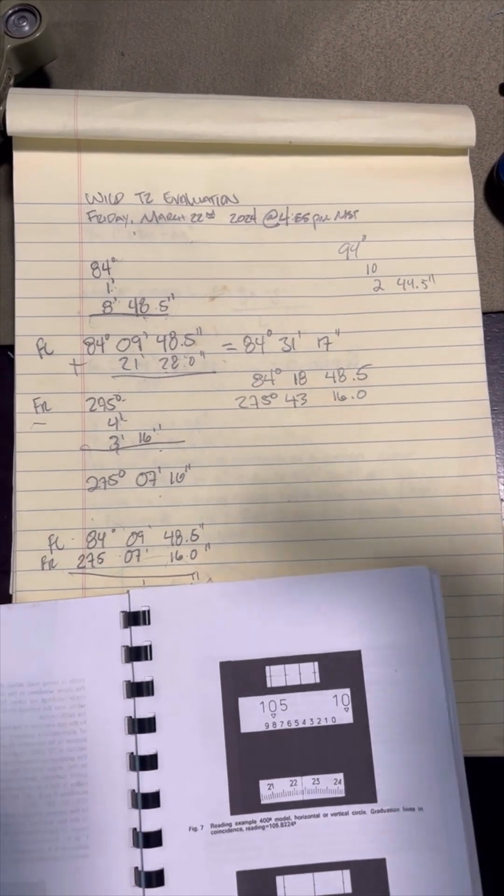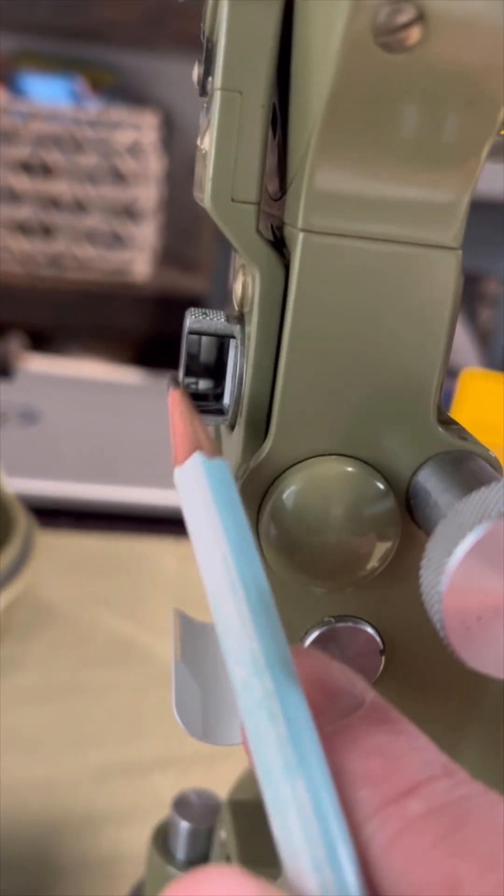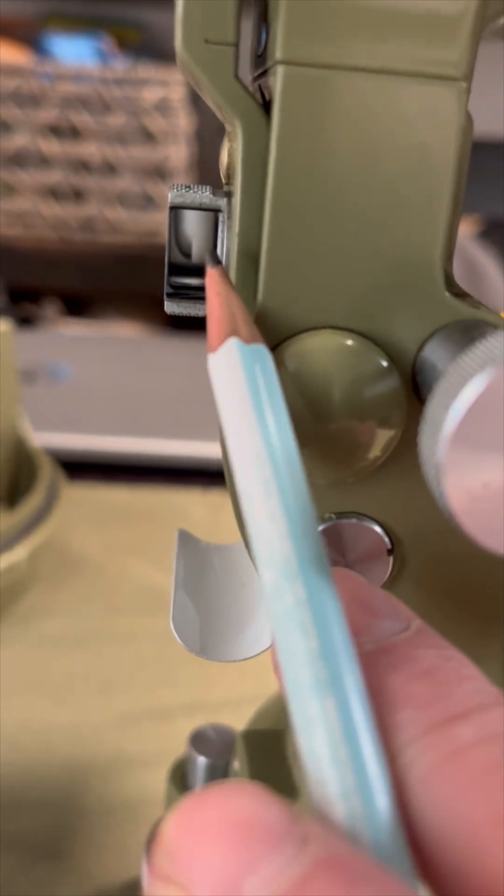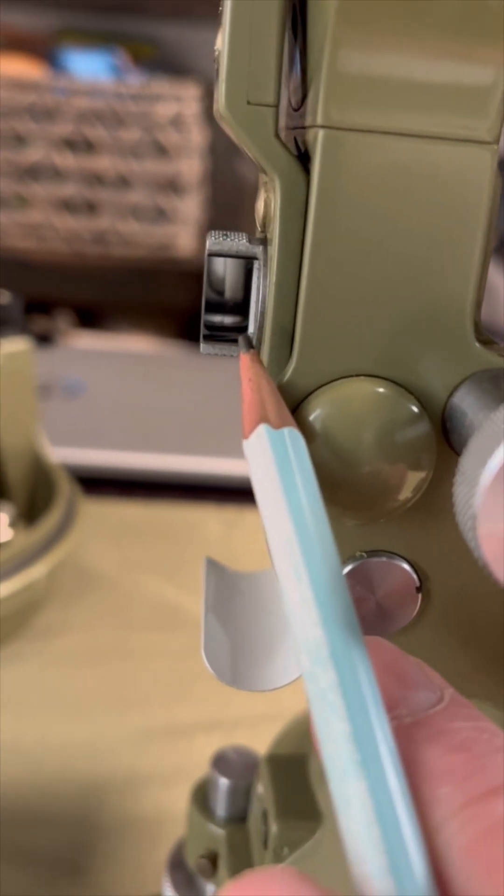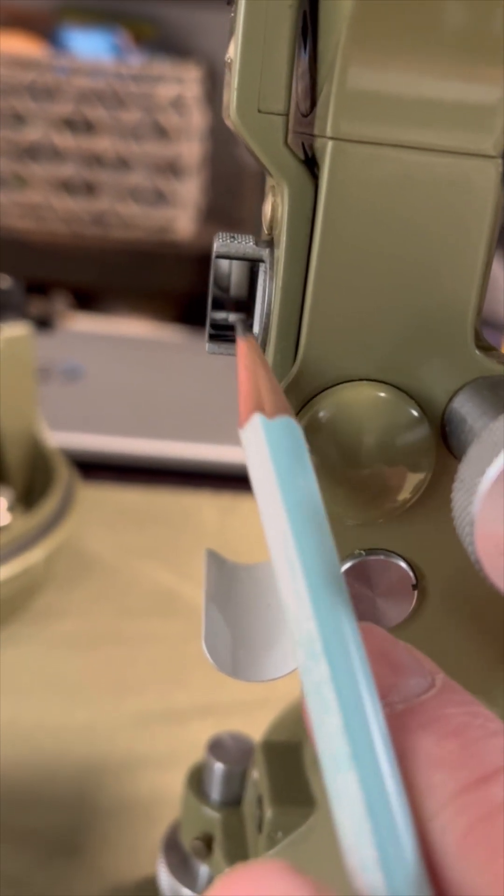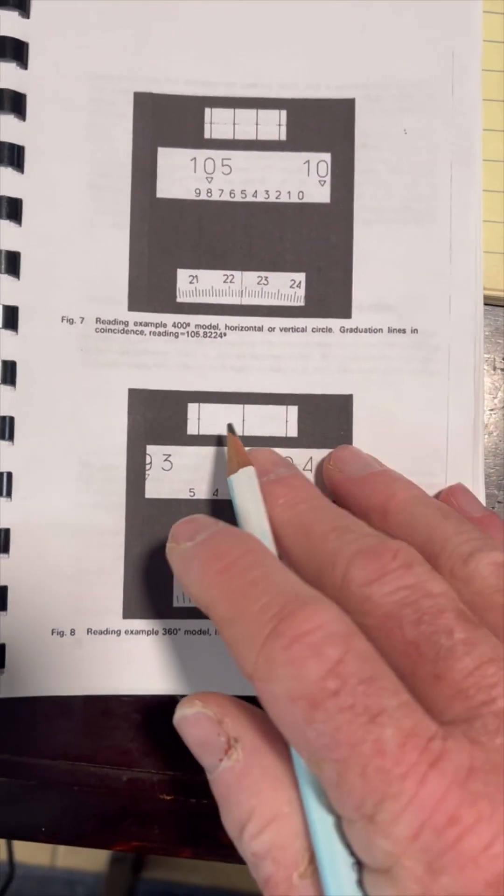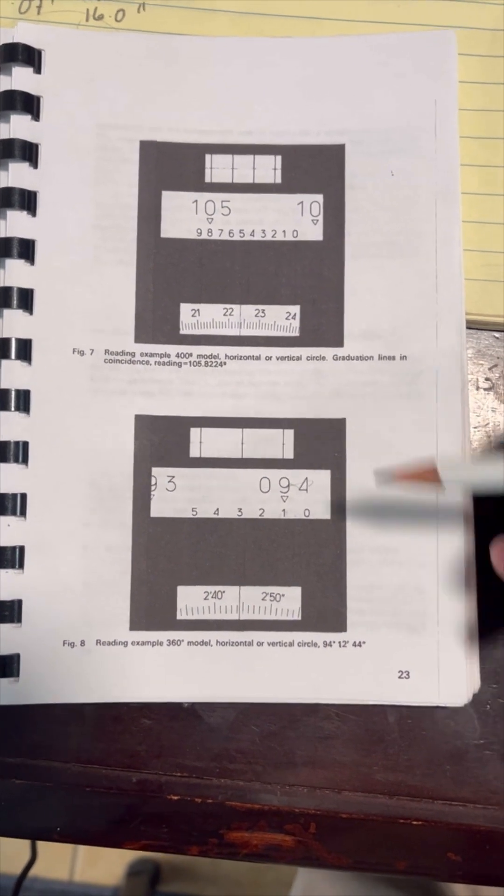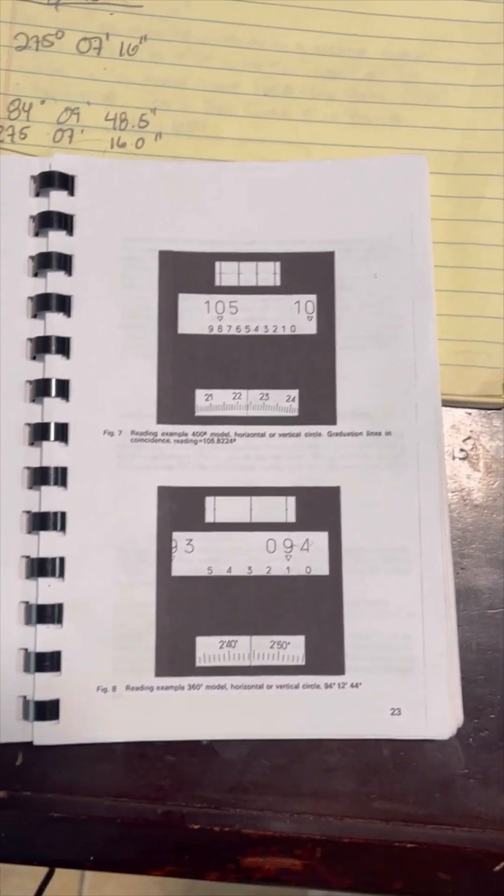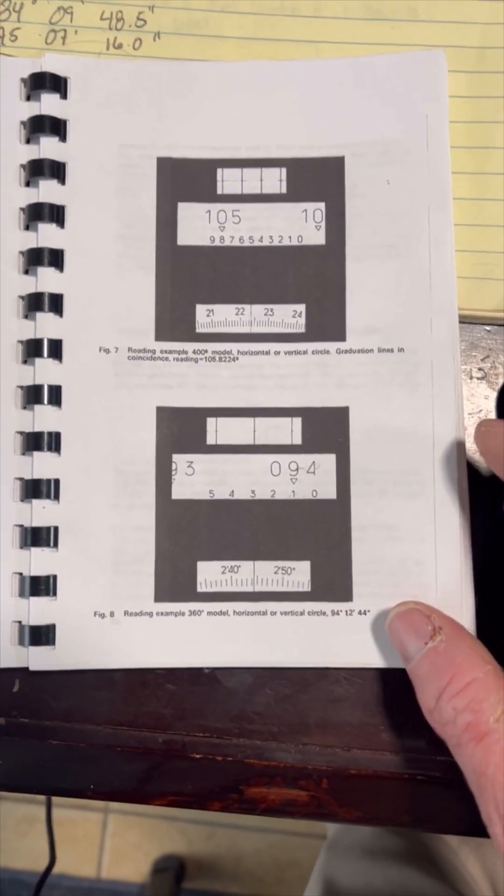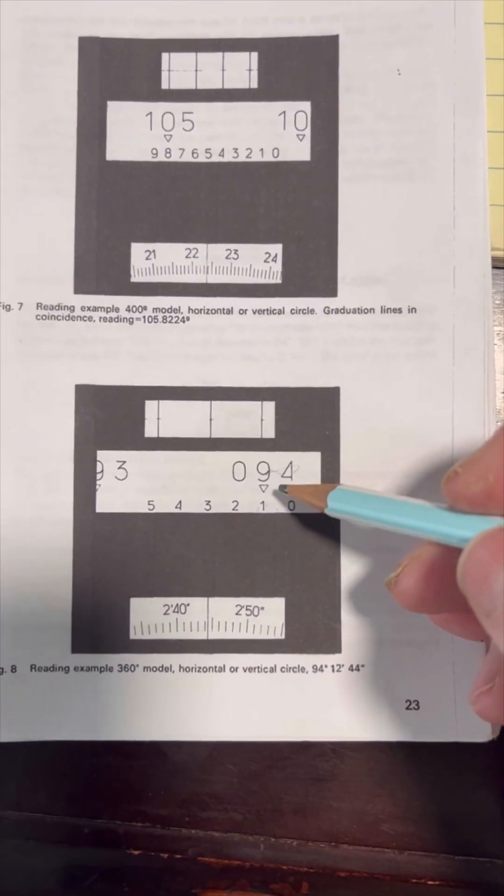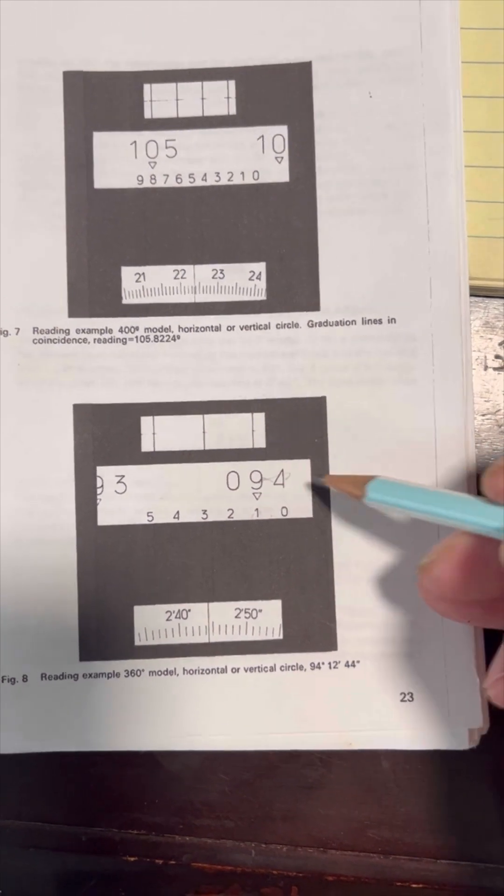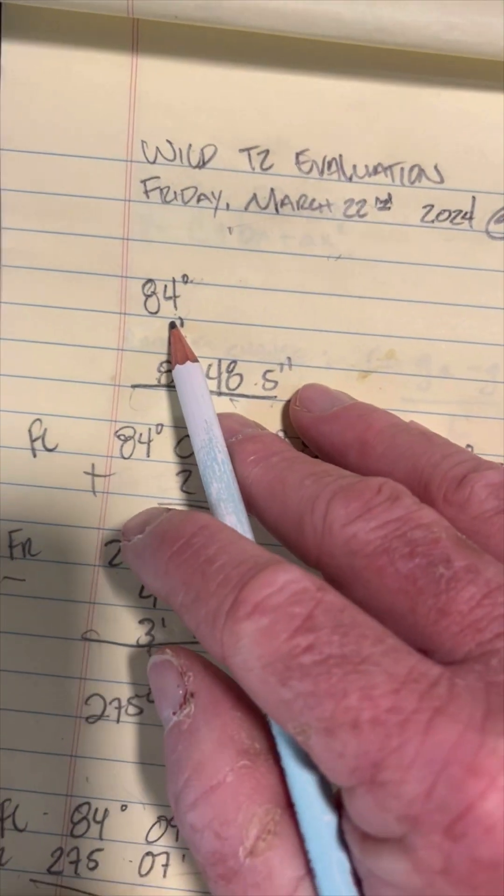So you get the instrument in face left. You get this coincidence bubble, the two halves of the bubble to line up. Once you have those two halves lined up, then you want to work on getting these lines in coincidence. Now, this is a face left reading for the vertical circle, and so your selector knob would be in the vertical position. Now, what I was doing was I would take the reading. Let's say I read 94 here. I would write my 94 where this 84 is.